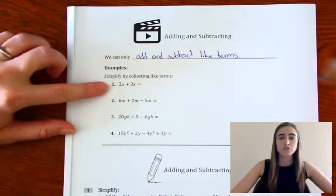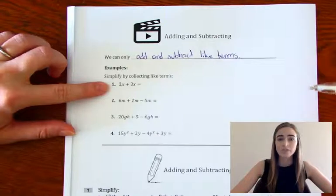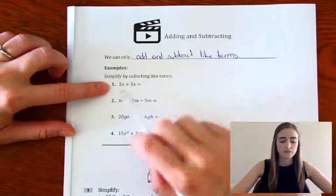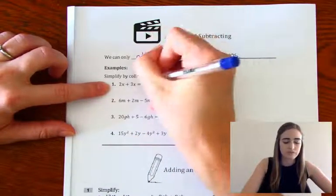So our first one, we've got 2x plus 3x. They're both like terms, so we're just going to add them together. So 2 plus 3 is 5, so we're going to have 5x.